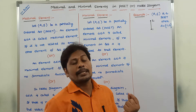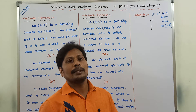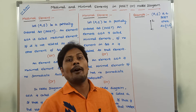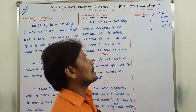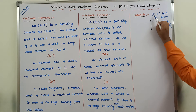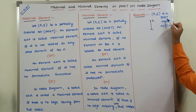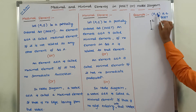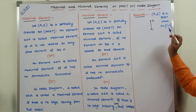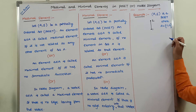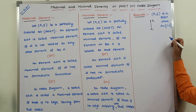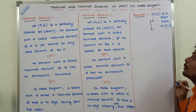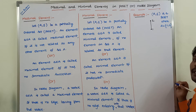First of all, what is a maximal element and what is a minimal element. Before going to the definition, we check this example. Here, (A, ≤) is a POSET. A is a finite set. The relation less than or equal to is defined on the elements of set A. It satisfies three properties: reflexive, antisymmetric, and transitive. Whenever it satisfies these three properties, we say (A, ≤) is a POSET.